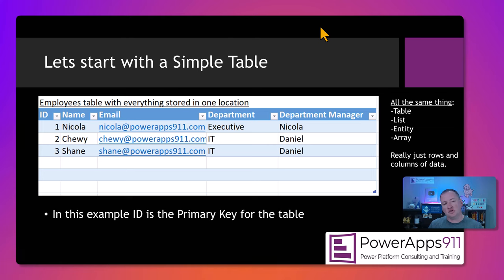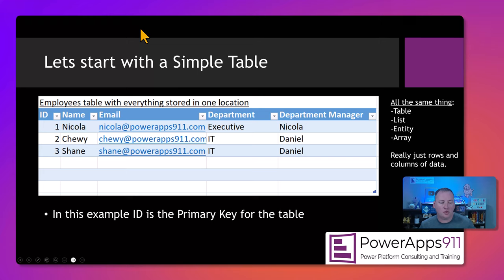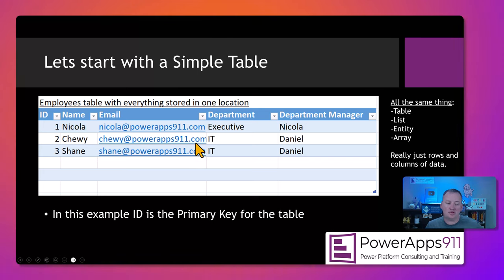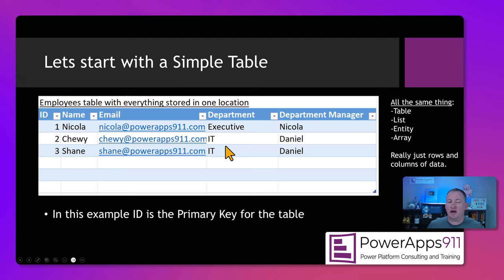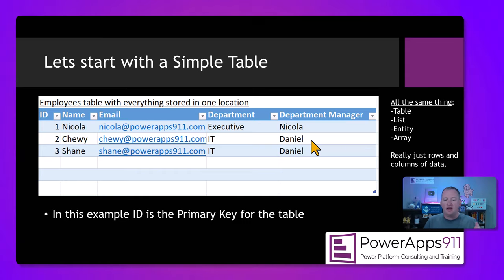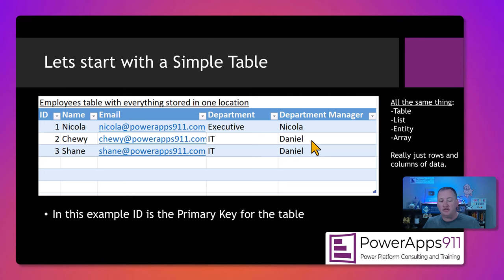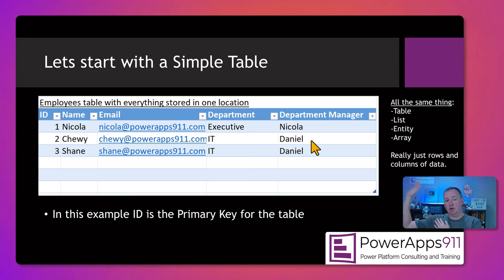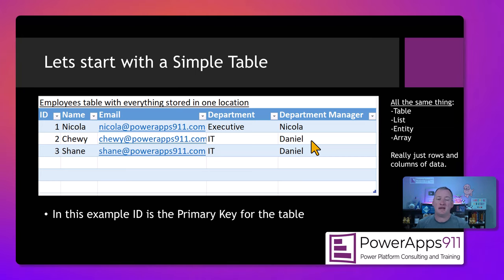When we look at this one, I want you to notice this is our basic table. Right away, you hopefully see there's some repetitive data. Even though we've got three different people, both Chewy and Shane are in the same department — IT — and we're still storing the department manager. One of the problems with this design is what happens if the department manager changes. Say Daniel gets a promotion or wins the lottery, and all of a sudden the department manager becomes Buddy.